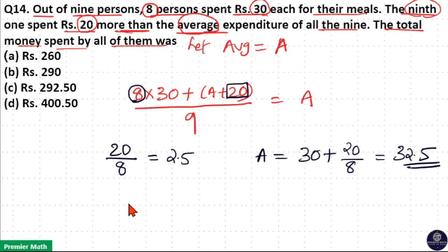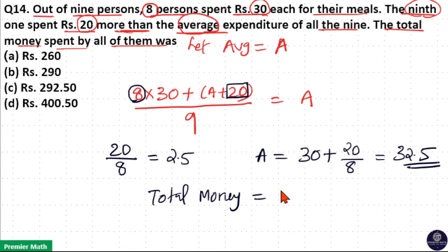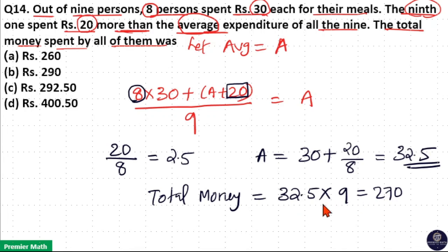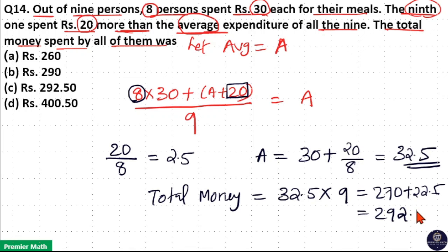Then total money spent is equal to average expenditure into total number of people 9, which is equal to 9 into 30 = 270, plus 9 into 2.5. Now 2.5 can be written as 5 by 2. So 5 by 2 into 9: 5 into 9 is 45, and 45 by 2 is 22.5. So 270 plus 22.5 is equal to 292.5.